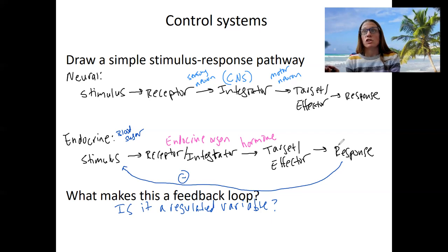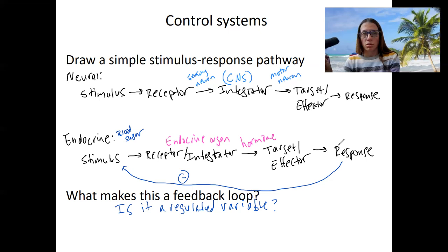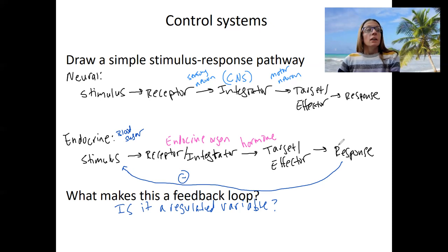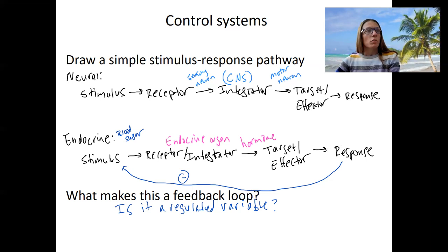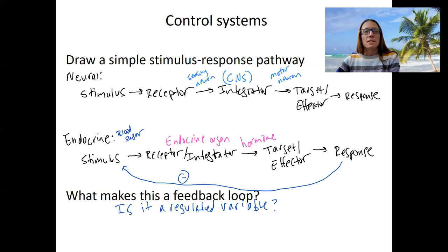There are endocrine functions in the body that are not necessarily involved in feedback loops — for example, processes related to growth and development. So again, emphasizing that distinction. That's an overview of the two control systems and a review of feedback loops and stimulus-response pathway components.